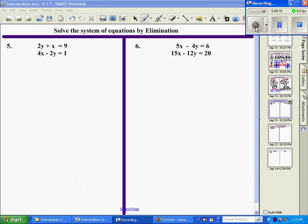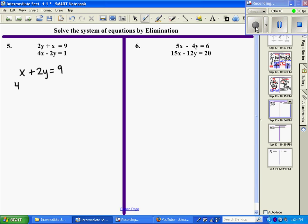Our next method is going to be elimination, so we're going to try to make things eliminate. Before we start this problem, I want to put it in standard form and line up all the variables. So I want to rewrite it so that the x's are first, then the y's, and then the constant. So I'm going to rewrite equation number 1 as x plus 2y equals 9, and then leave the bottom one as 4x minus 2y equals 1.